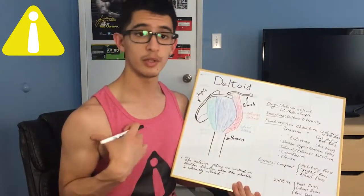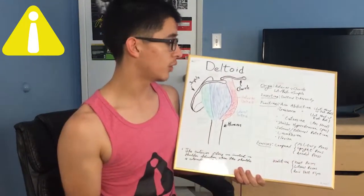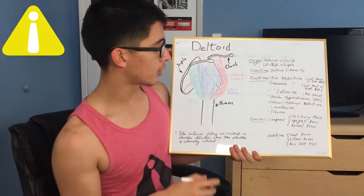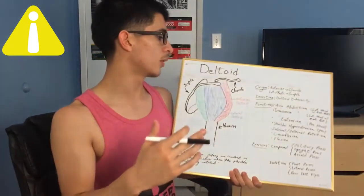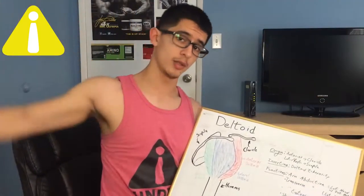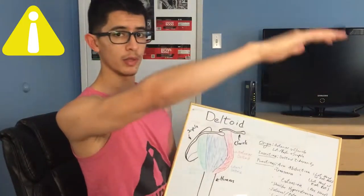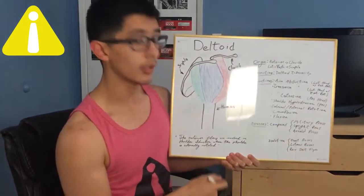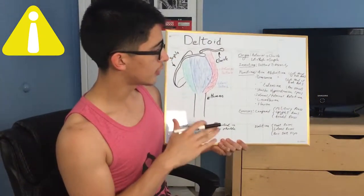The delts are pretty much the main players in internal and external rotation, but the chest does help with internal rotation since it inserts into your humerus and pulls on it. Your back muscles contribute to external rotation just a little bit. Next we have circumflexion and flexion. Circumflexion — circum means circular — you see it through baseball players pitching during the whole windup. Flexion is simply raising your arm forward, and I'll explain the front delt's role in front raises in just a bit.